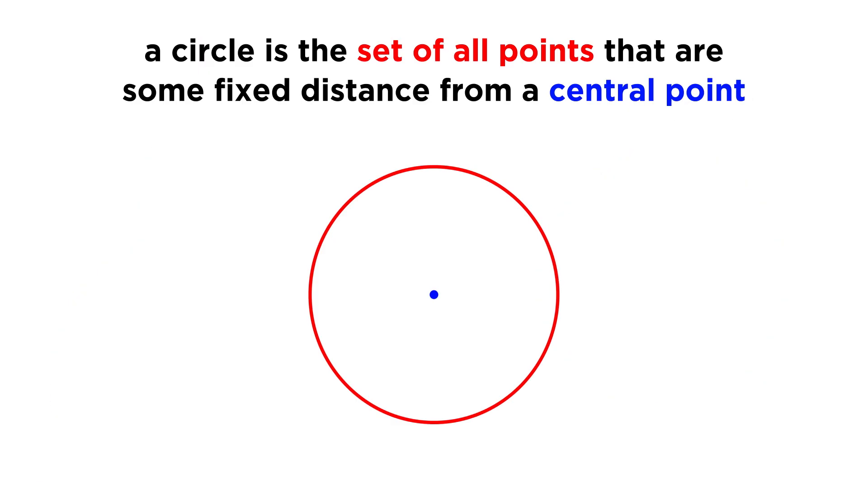A circle is simply the set of all points that are a particular fixed distance from some central point. So unlike triangles and other polygons, where we have to define all kinds of side lengths and angles, to get a circle we only need to define two things.